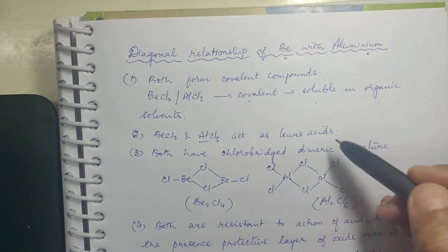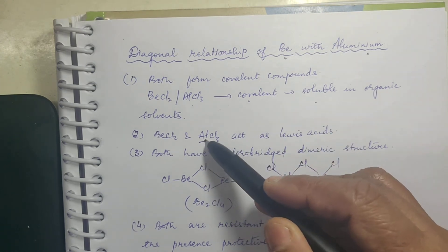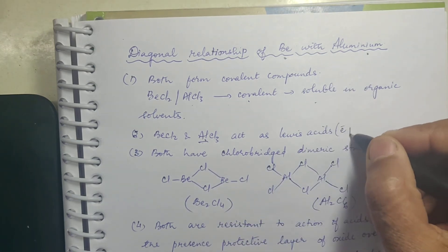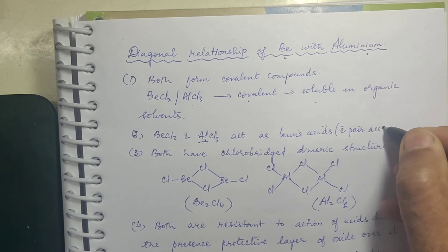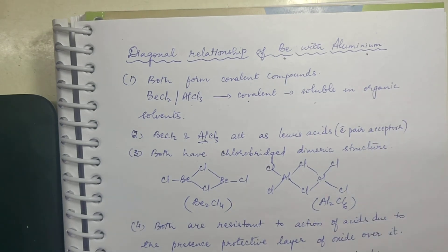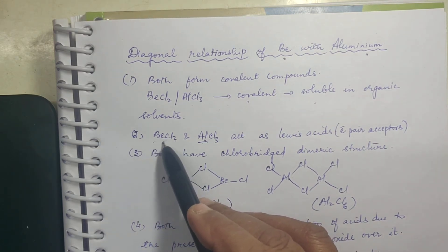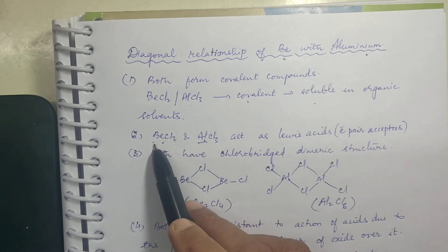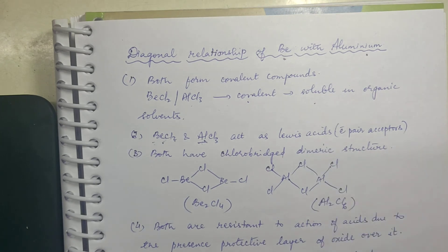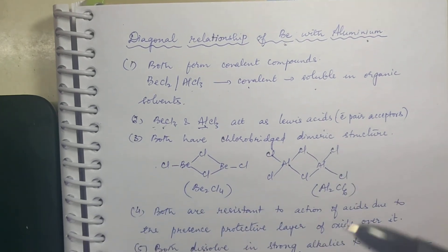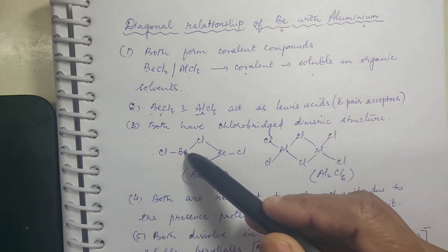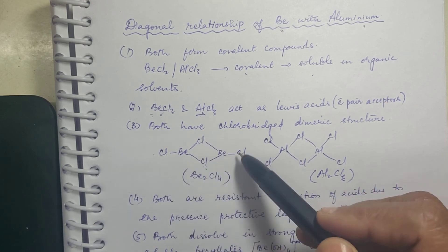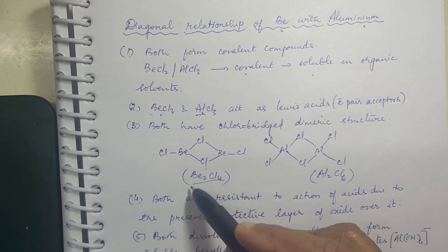AlCl3 is a Lewis acid — we studied this in the equilibrium chapter — because the central aluminium has only 6 electrons and can accept a pair of electrons. Similarly, in BeCl2 beryllium has only 4 electrons (2 own + 2 shared), so it is also a Lewis acid. Both beryllium and aluminium have a chloro-bridged dimeric structure: Be2Cl4 (two Be atoms bridged by two Cl atoms with one Cl on each side) and BeCl2 is written generally, but the dimer is Be2Cl4.